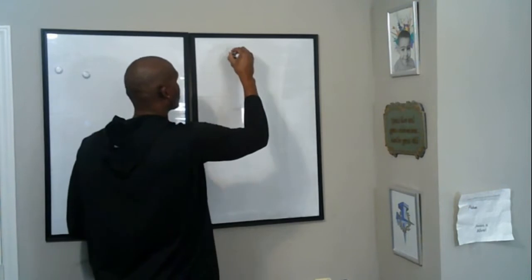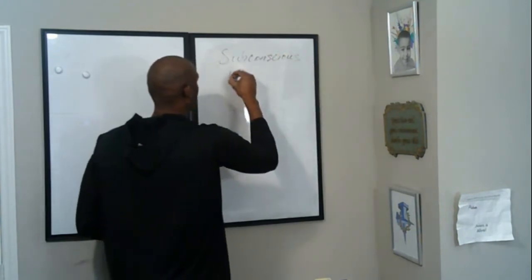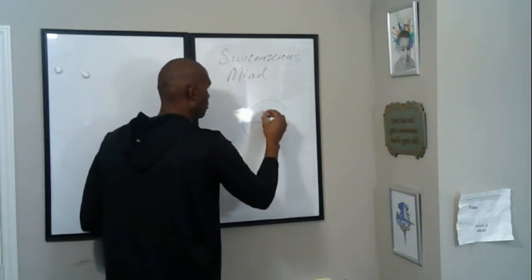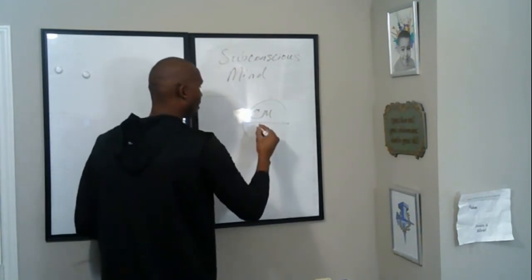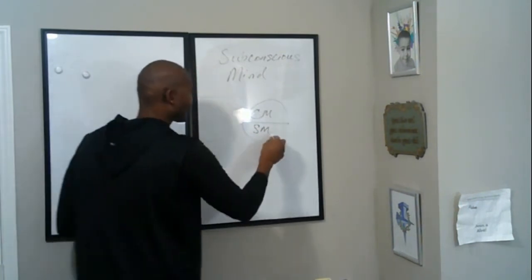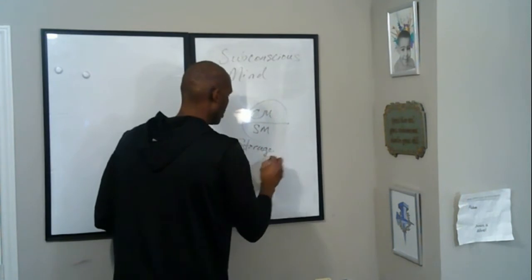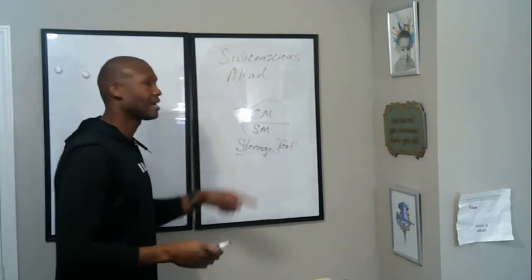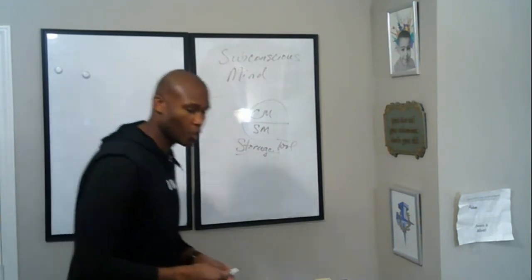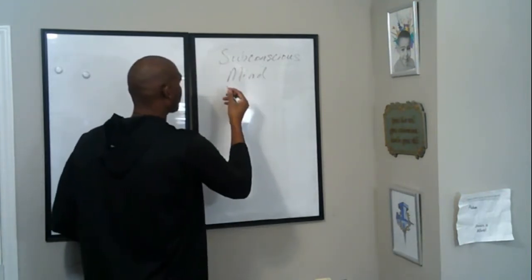It all starts with your subconscious mind. So if I draw that circle again, we have the conscious mind being the higher mind. The subconscious mind is the lower mind. This is your storage tool. This is where all your behaviors, habits, actions are stored. This is where they're stored.